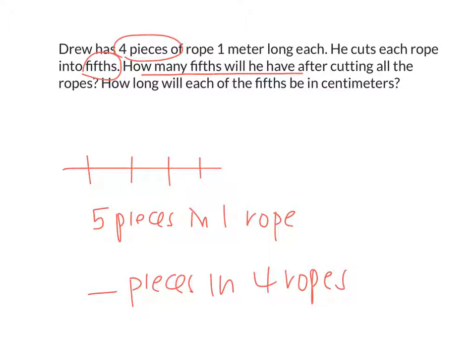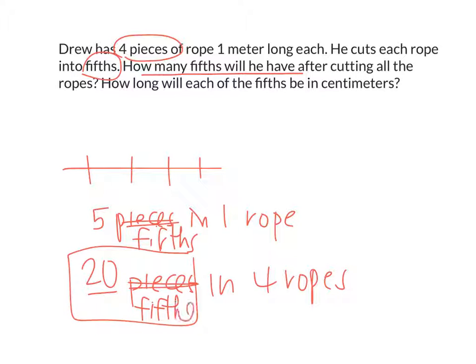So, how many fifths will there be in four ropes? Everyone? Twenty. Twenty. So, how many fifths will he have? Twenty-fifths or 20 pieces. Okay? I guess we can call it fifths. So, there's five fifths in one rope, so there would be twenty-fifths in four ropes. Do you guys agree? Yes.